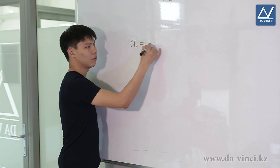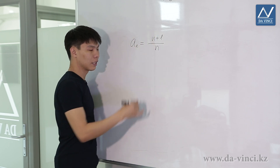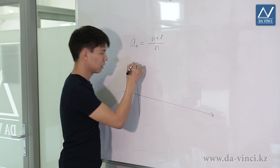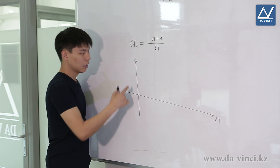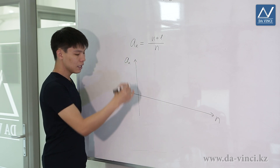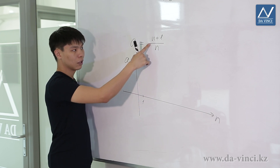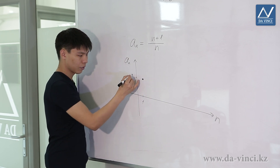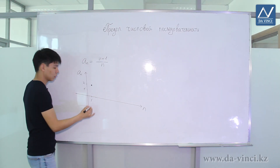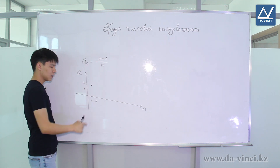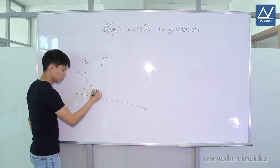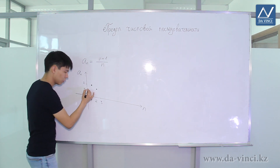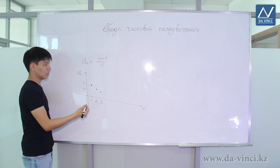Let's say we have a sequence of the form aN = (N+1)/N. Let's see how the elements behave by drawing a graph, plotting N on the x-axis and the value on the y-axis. If N=1, we get (1+1)/1 = 2. If N=2, we get 3/2 or 1.5. If N=3, we get 4/3 or 1 and one-third, slightly lower than the previous point.